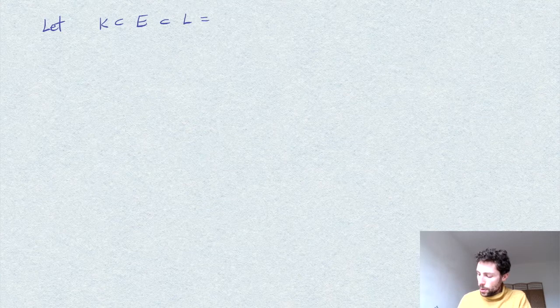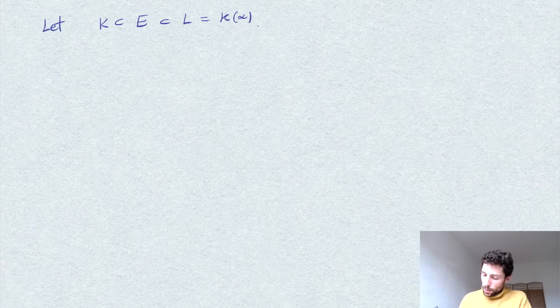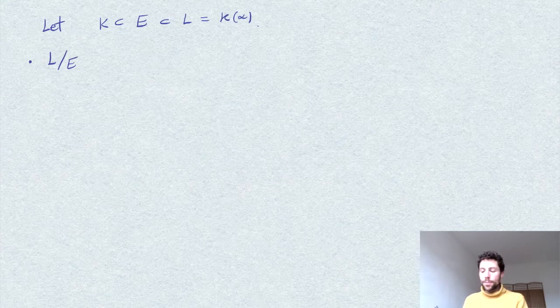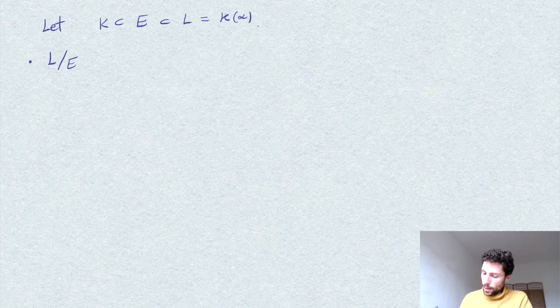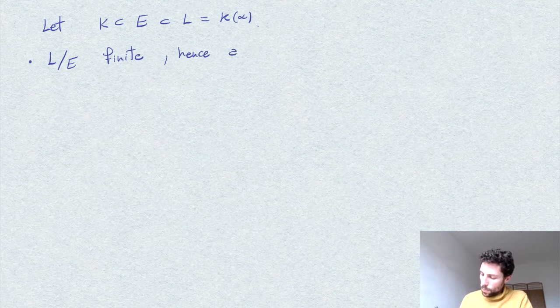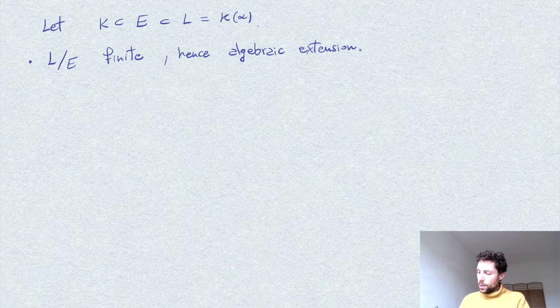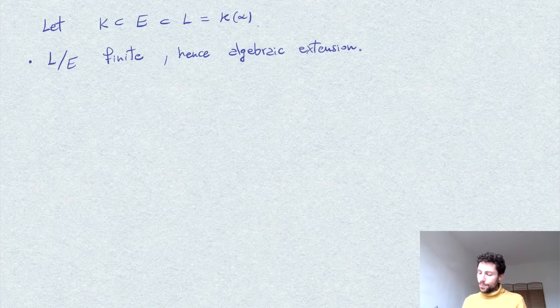Let's start. We take our intermediate field E, and remind ourselves that L is nothing else but k extended by α. First we observe that the extension L over E is finite, since L over k is finite, so it is a finite extension and therefore algebraic. So we can consider α as an element over E — it is algebraic and therefore admits a minimal polynomial.